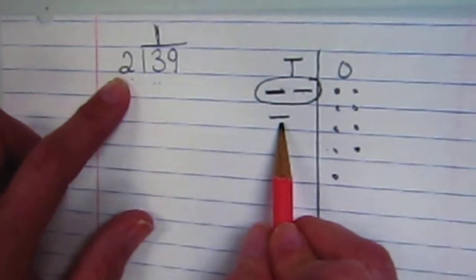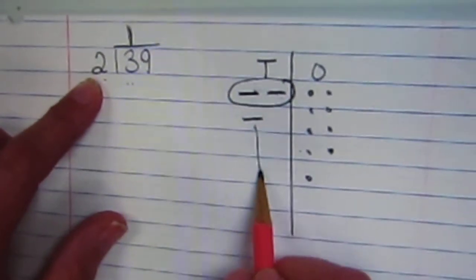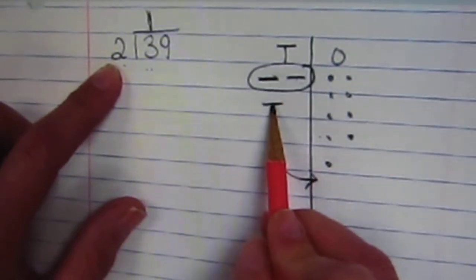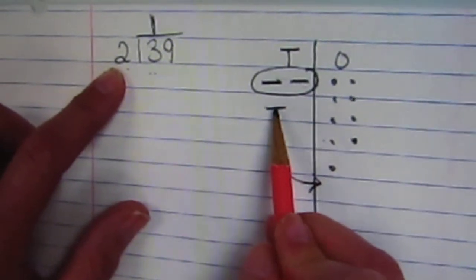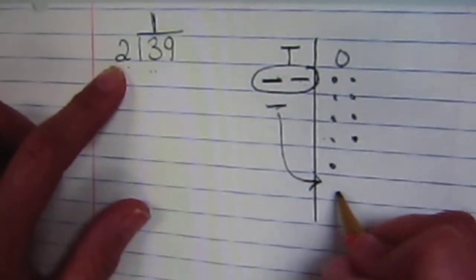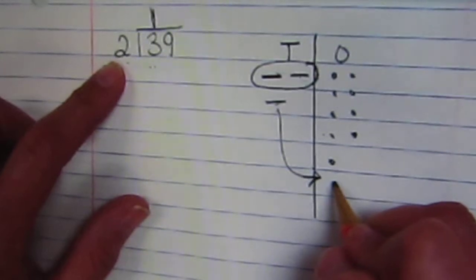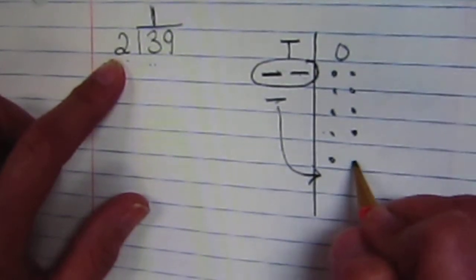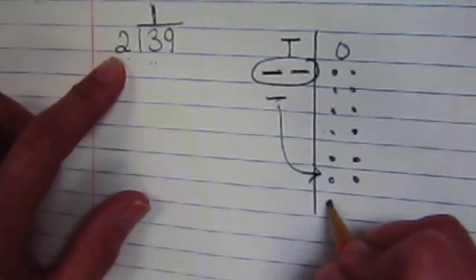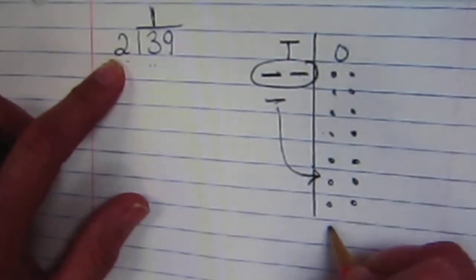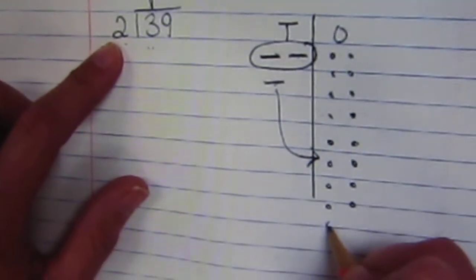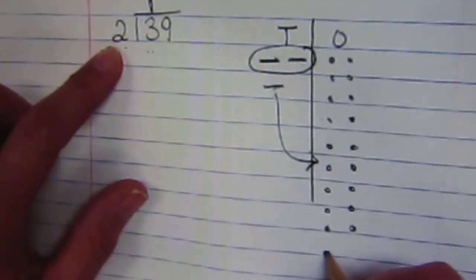So we have a ten left over, so we're going to need to regroup it over here. Ten tens equal ten ones, so I'm going to add ten ones: 1, 2, 3, 4, 5, 6, 7, 8, 9, 10.